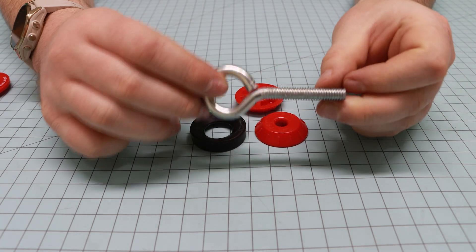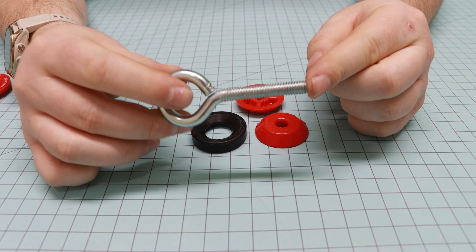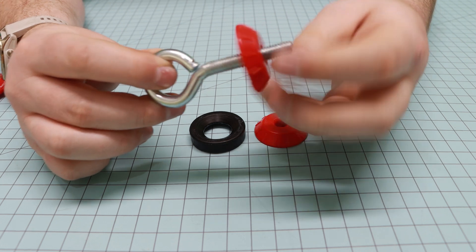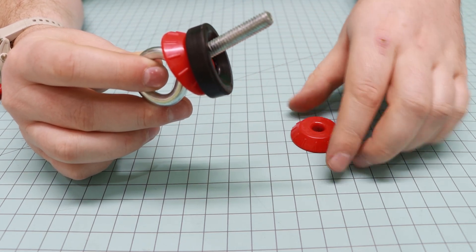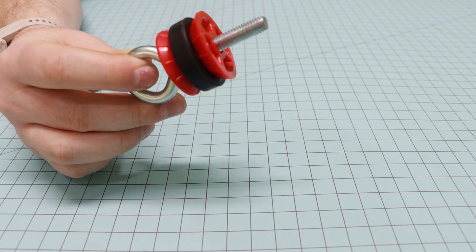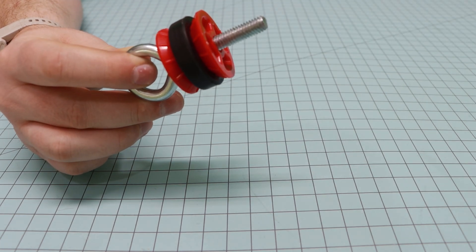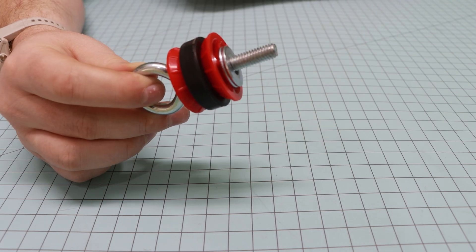We'll then take a five sixteenths by three and a quarter inch eye bolt, load on one of the small rings, the rubber expansion piece and the second small piece, and let's throw in two five sixteenths inch washers.